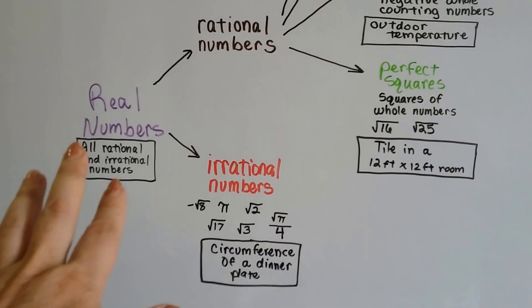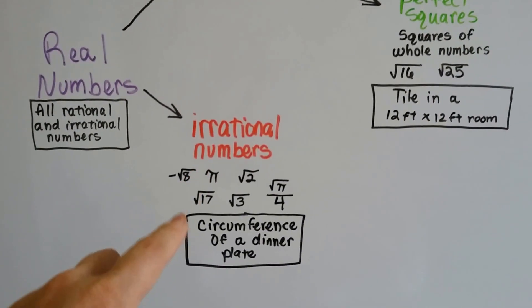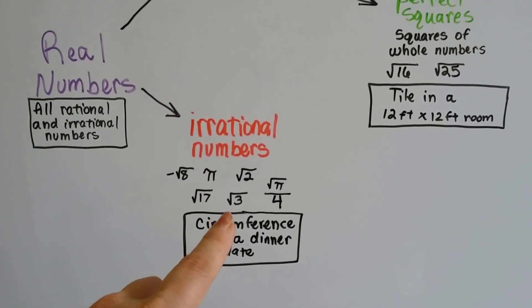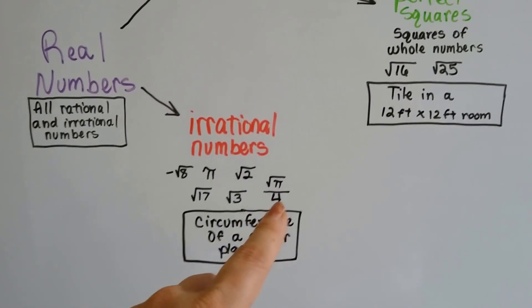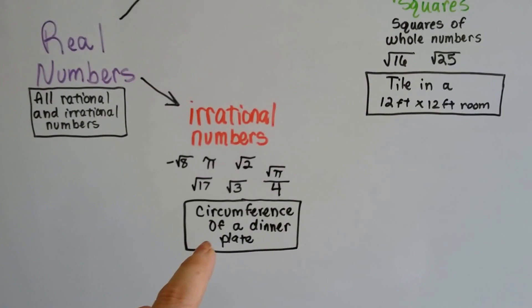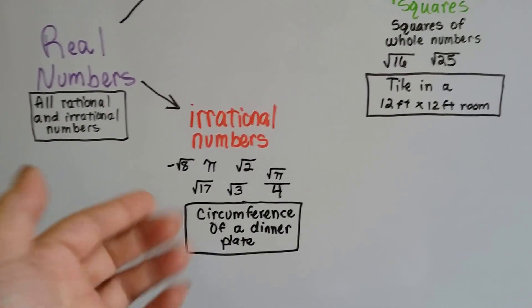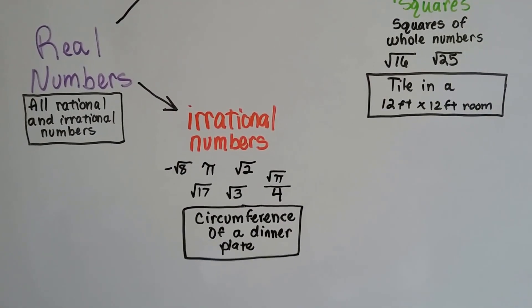So the real numbers are all of these. For irrational numbers, it would be like pi or the square root of 2 or square root of 3 or even the square root of pi over 4 as a fraction. The circumference of a dinner plate would be considered an irrational number because we have to use pi to find the circumference.